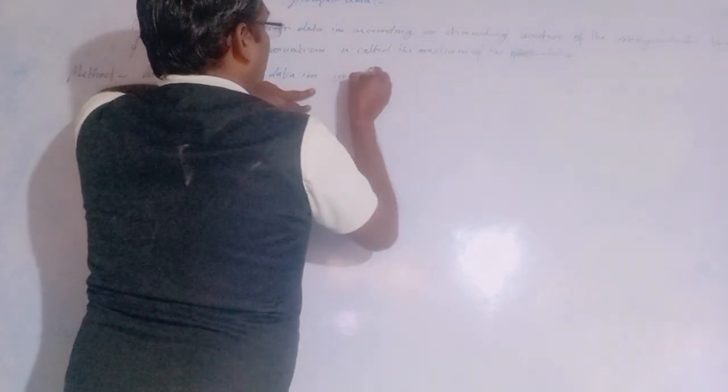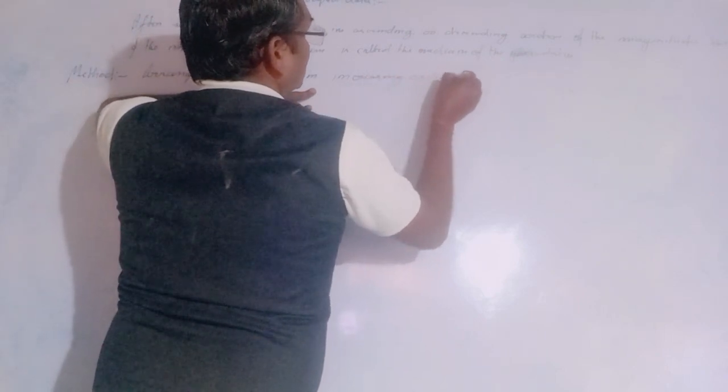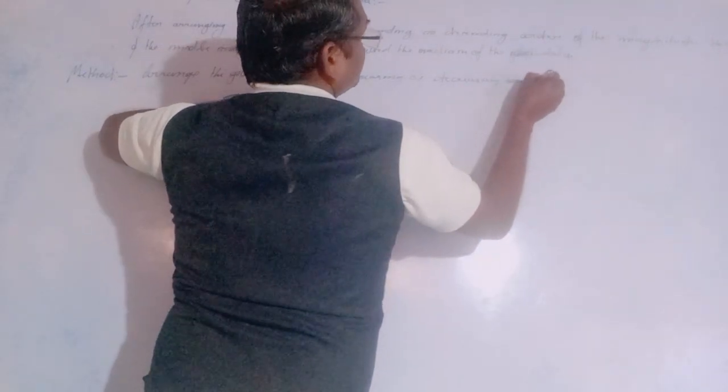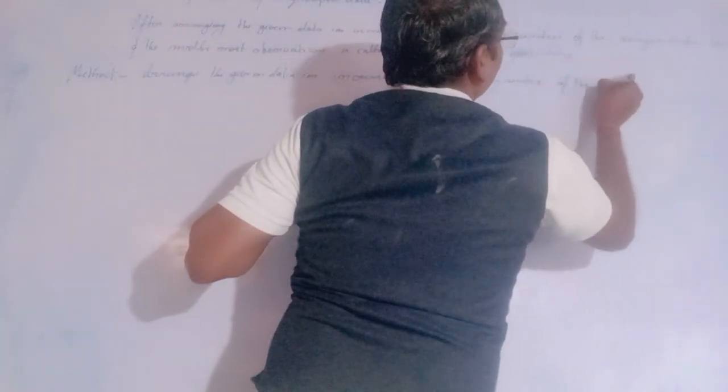Now, median of ungrouped data: we will find out how to calculate the median of ungrouped data. Method: Step one — arrange the given data in increasing or decreasing order of magnitude.